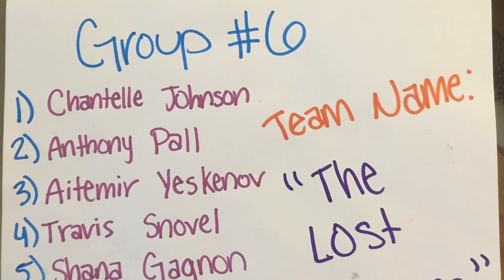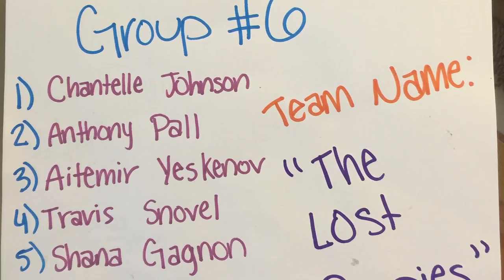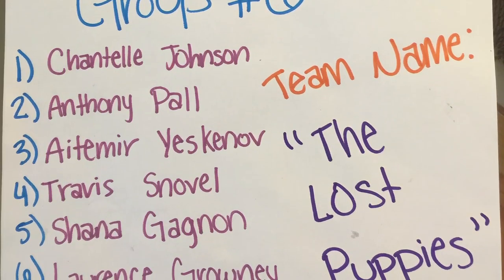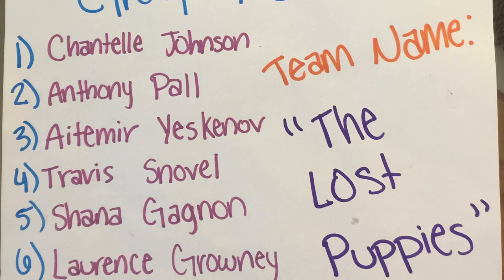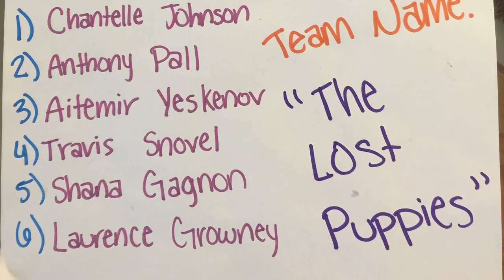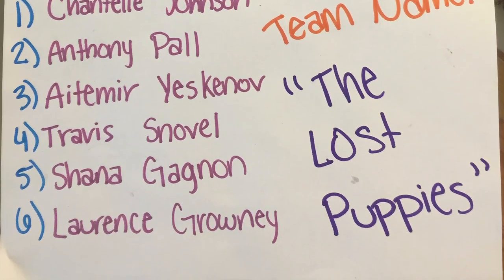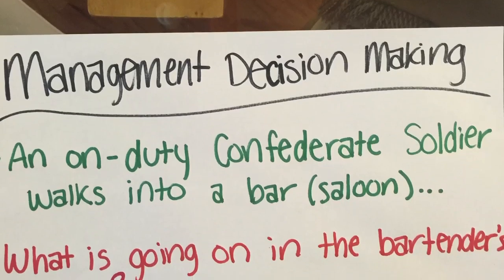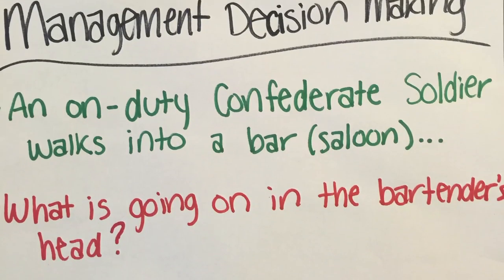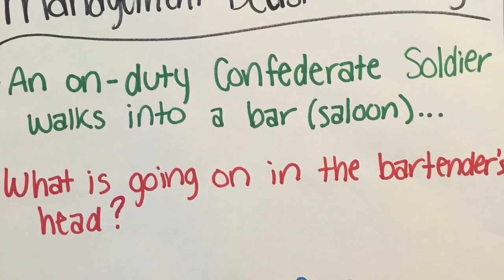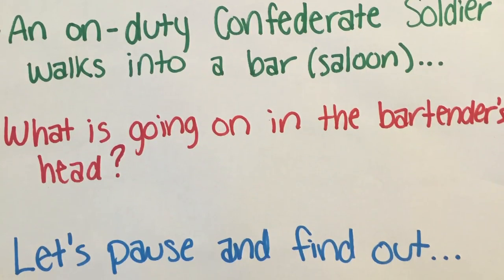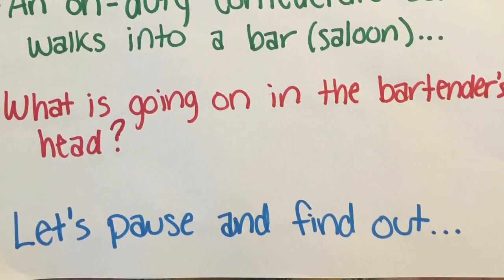We are group 6, also known as the Lost Puppies, and this is the management decision-making slide that we'll be presenting. So an on-duty Confederate soldier walks into a bar. What's going on in the bartender's head? Let's pause and find out.